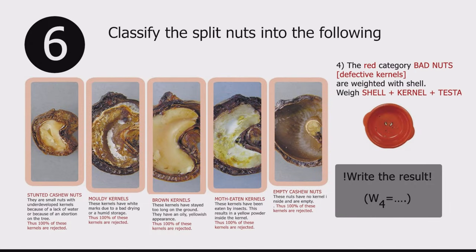Finally, to determine the quantity of bad defective nuts, weigh the quantity of bad canals plus the shells and record this as W4.